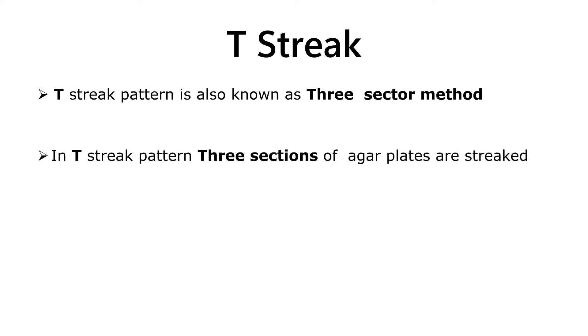T-streak pattern is also known as three-sector method. In this pattern, three sections of agar plates are streaked.